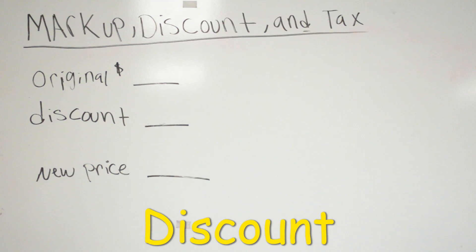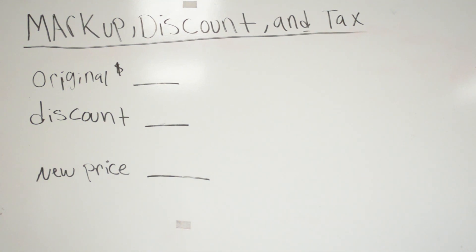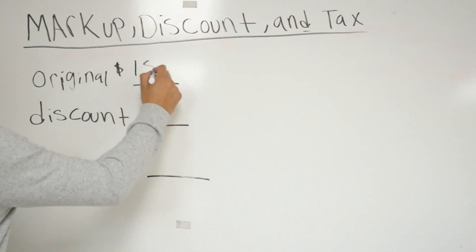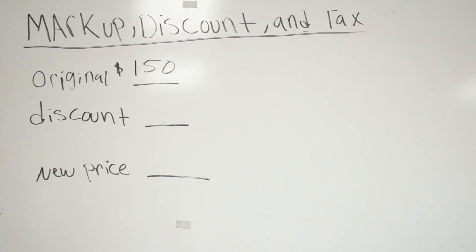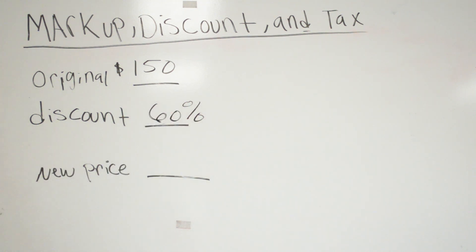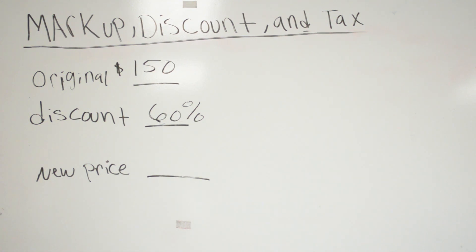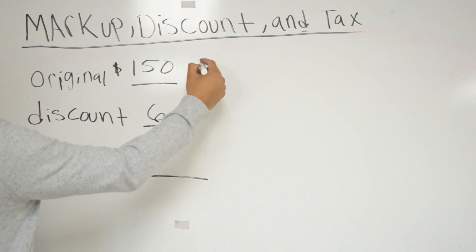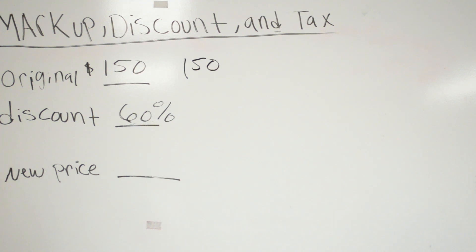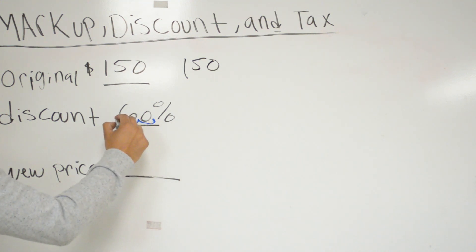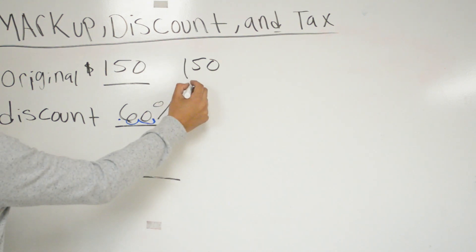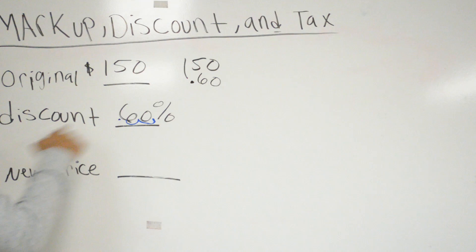Now let's talk about a discount problem. I wanted to buy a sweater — the original price is $150. But because I waited until the summer, there's a sale and it's discounted 60%. We're going to find what I'm going to pay at the end with the discount. We'll multiply 150 times 0.60.